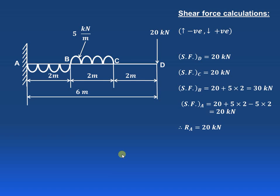Let us start with the shear force diagram first. The conventions we are assuming for drawing the shear force diagram are that upward forces are considered negative whereas downward forces are considered positive. Shear force at point D is 20 kN, which is acting in the downward direction, so it is positive. As there is no load acting between D and C, the same shear force of 20 kN will exist at point C also.